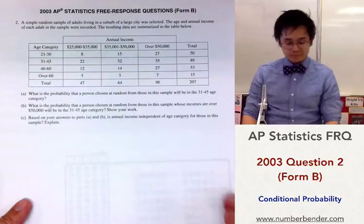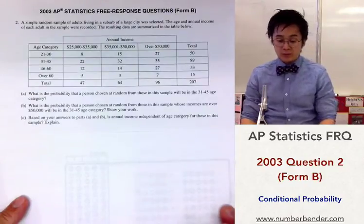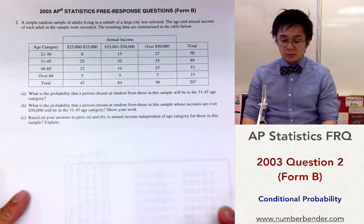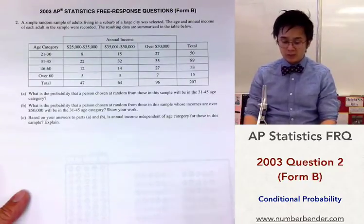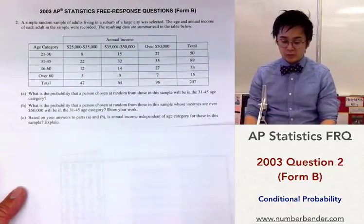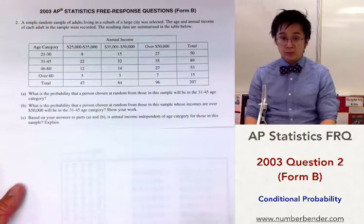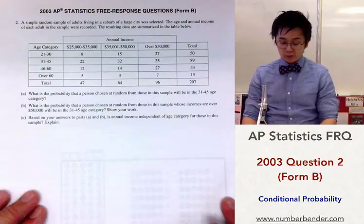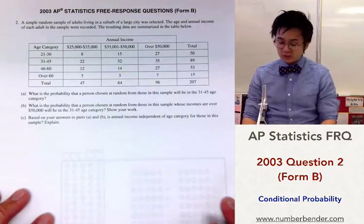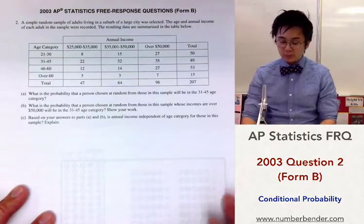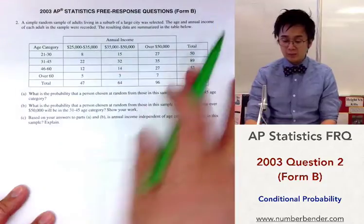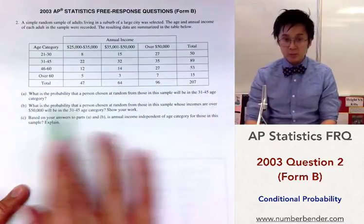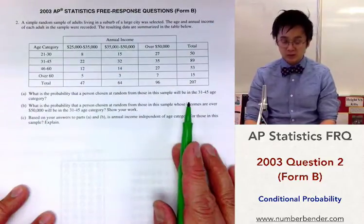For problem number two in the 2003 AP Stat Test Form B, we are going to be answering a probability question. For the first part, we are going to use this table to answer a simple probability question on part A.